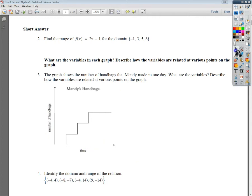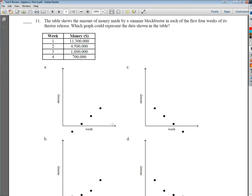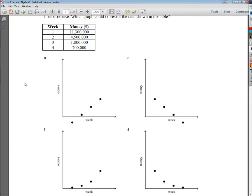So the next one that you asked about is number 11. I have a sticky note on my board that tells me. This question says you want to see how much money is made by a summer blockbuster in the first four weeks of the release. Which graph would best represent the data? Now there's a couple things in play here that you have to understand.